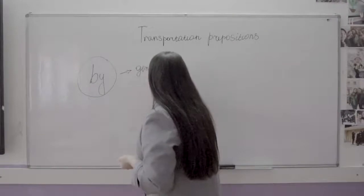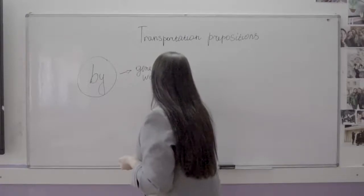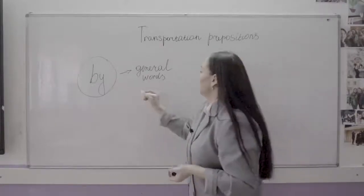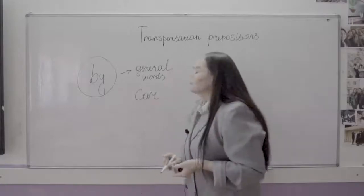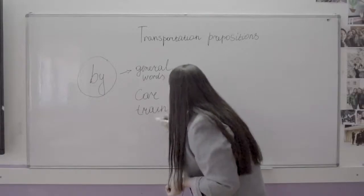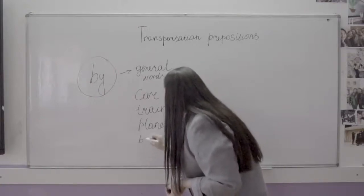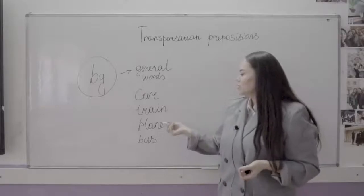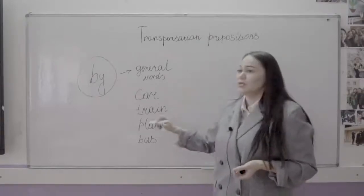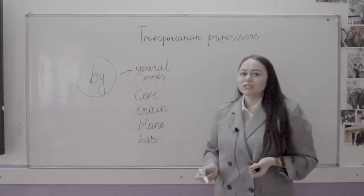I travel to Taraz by bus. Secondly, we use 'by' with vehicle words: I travel by car, I travel by bus. There can be a lot of words — bus, plane, and many more. The most important thing is that all of them are types of transportation or vehicles. So we use 'by' with types of vehicles.